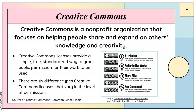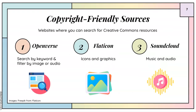There are six different types of Creative Commons licenses that vary in level of permission. There are three places you can start to find these licenses and Creative Commons sources: First is Openverse, which allows you to search by keyword and then filter. Flat Icon for icons and graphics. And SoundCloud for music and audio.